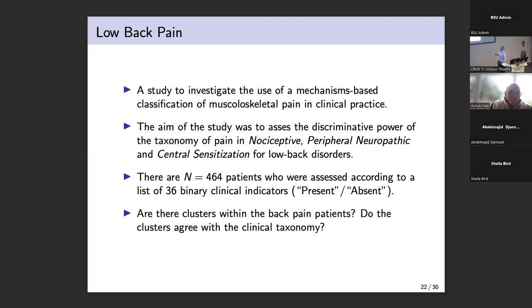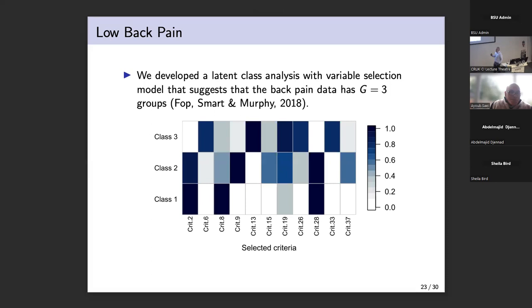So the current taxonomy of patients within physiotherapy was that there's nociceptive back pain, peripheral neuropathic and central sensitization. But I want you to analyze the data not using that information and see what you find. Do we get the same results as what the clinicians think or not? So we ran a number of clustering methods and we came up with a way of trying to do feature selection and clustering simultaneously for categorical data. And basically the results is we found you can cluster the patients. We've got three clusters based on a small number of the features that were recorded for the patients.